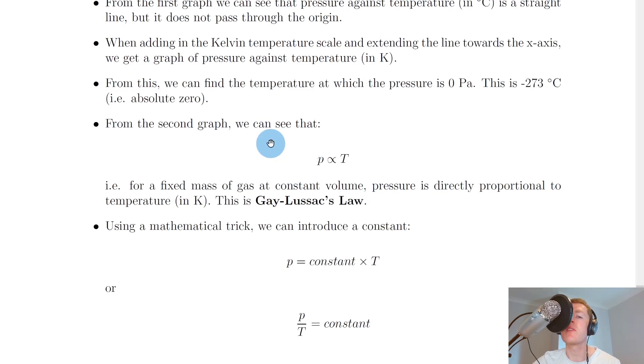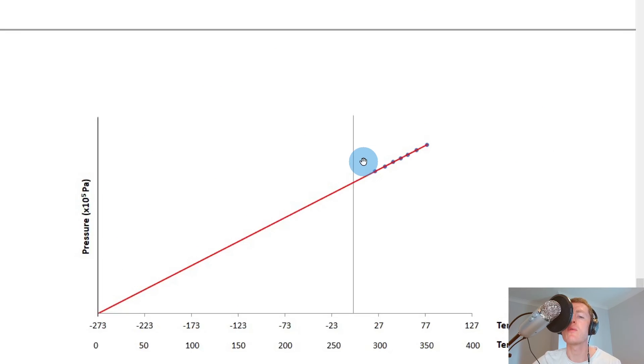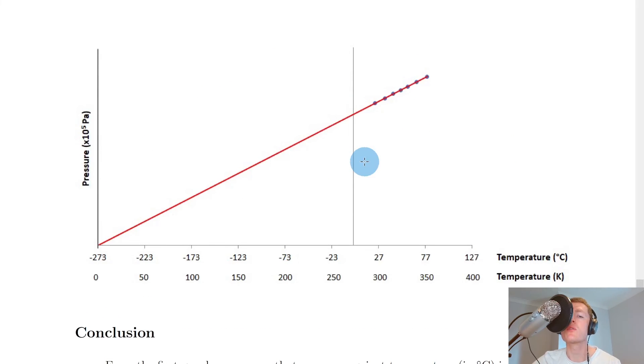So from the second graph we can see that pressure is directly proportional to temperature. So if we look here you can see that because we've got this straight line going through the origin and we've got pressure and temperature in Kelvin as our two variables then this tells us that as temperature in Kelvin goes up pressure also goes up or as temperature in Kelvin goes down pressure also goes down. I.e. the same thing happens to both variables at the same rate. They are said to be directly proportional to each other.